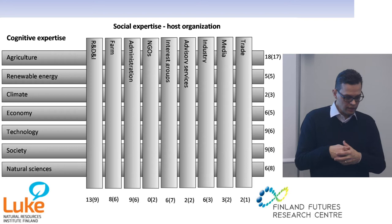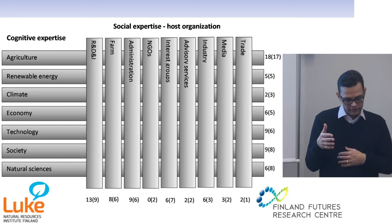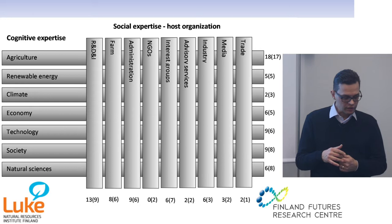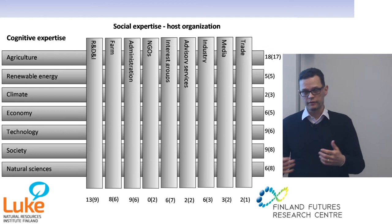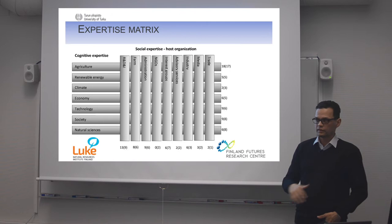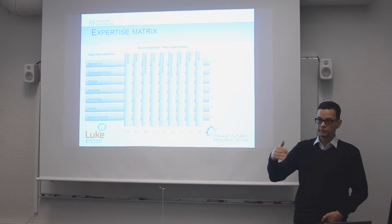We have people from retail or trade in this panel, mass media, industry, food industry, advisory services — which are important in the field of agriculture — interest groups or lobbying groups, non-governmental organizations, administration, people having actual access to a farm, and people from research, development, or innovation categories. If you sum up all the numbers, you would find that it considerably exceeds the 28 people, but this is because one person can of course possess several expertises.